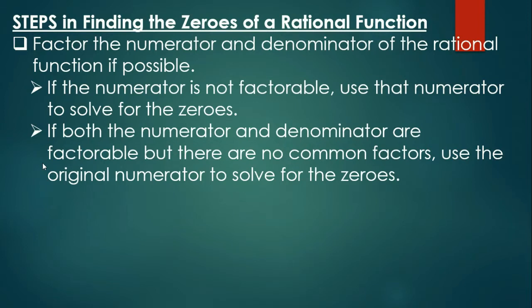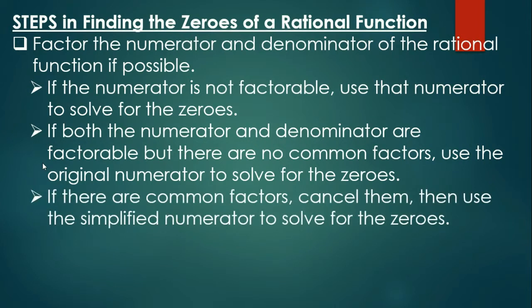If both the numerator and denominator are factorable but there are no common factors, use the original numerator to solve for the zeros. Kapag factorable yung numerator, at may nakita ka na magkaparehong factors, pwede natin i-cancel out. Then, yung simplified na numerator ang gamitin natin to solve for the zeros.